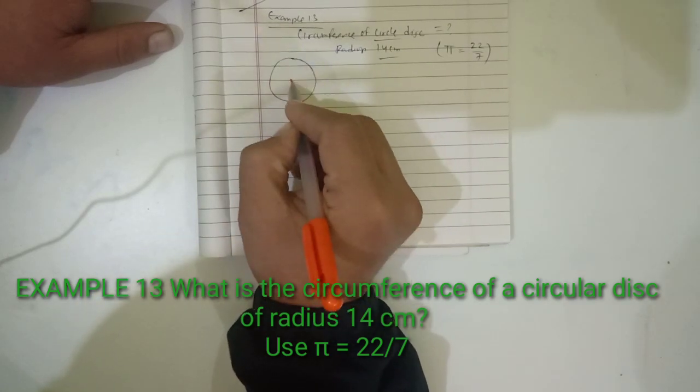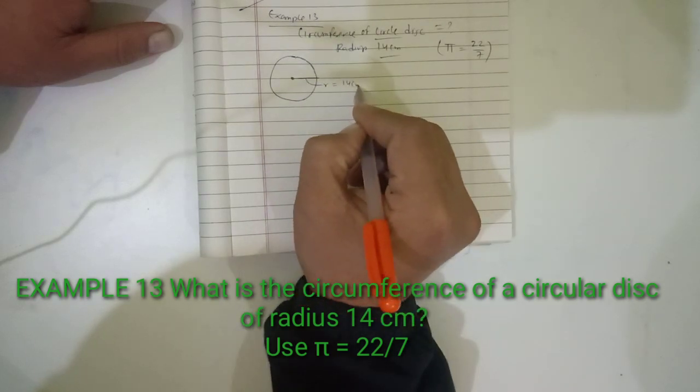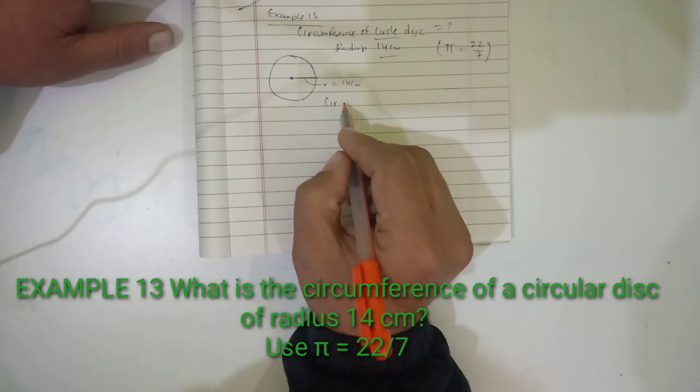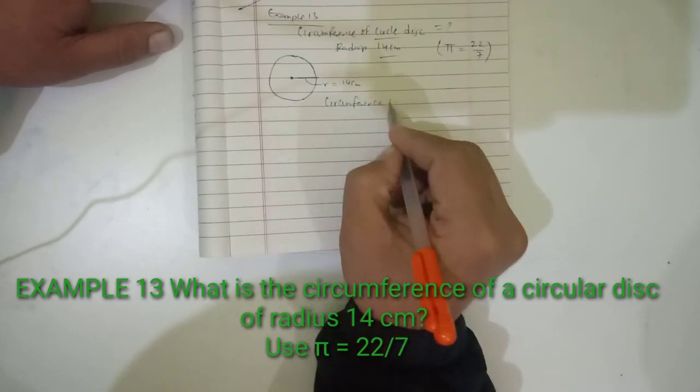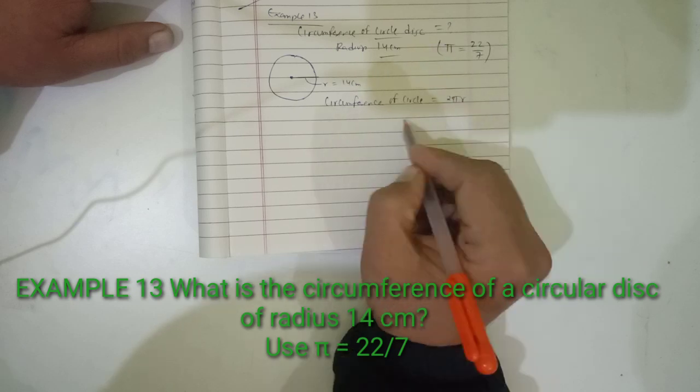If I draw a circle, this is the center point, and this is the radius which is 14 centimeters. The formula for finding circumference of a circle is C = 2πr. Just put the values.